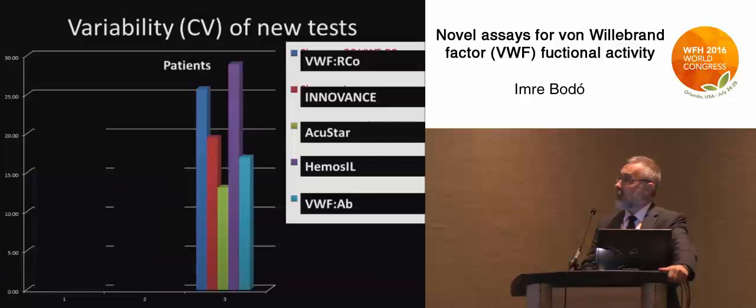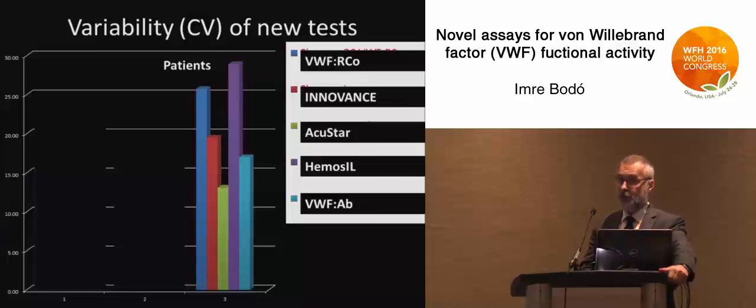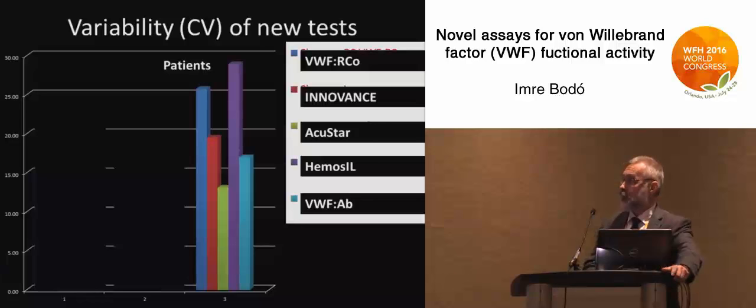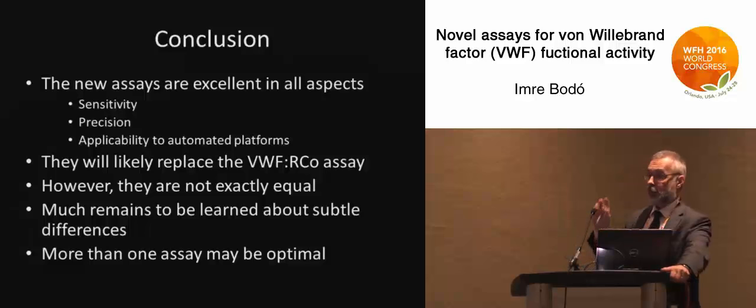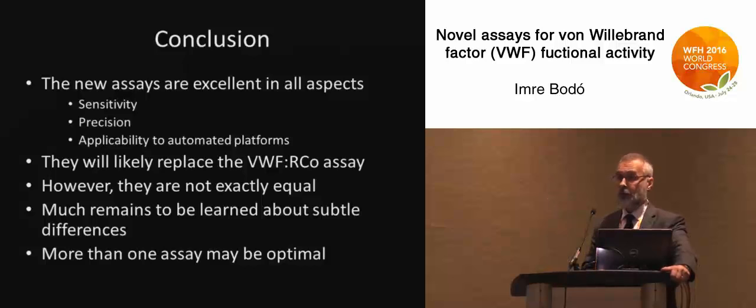As for assay performance, variability was pretty good. It is always easier to measure normals precisely; with lower patient samples, the percent variation is always higher. It should be noted that this coefficient of variation is very different from the ones typically reported, because this is not one sample measured repeatedly, but many samples measured a few times across different laboratories — so this is closer to a real-life coefficient of variation — and all assays perform well.